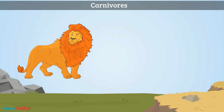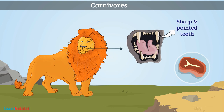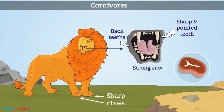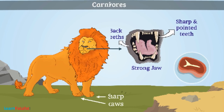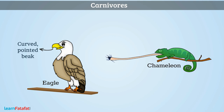For tearing the flesh, they have sharp and pointed teeth, sharp claws, and very strong jaws. They chew flesh with strong back teeth. Carnivore birds such as Eagle have curved pointed beaks for tearing the flesh. Some animals such as Chameleon catch insects with their long tongue.